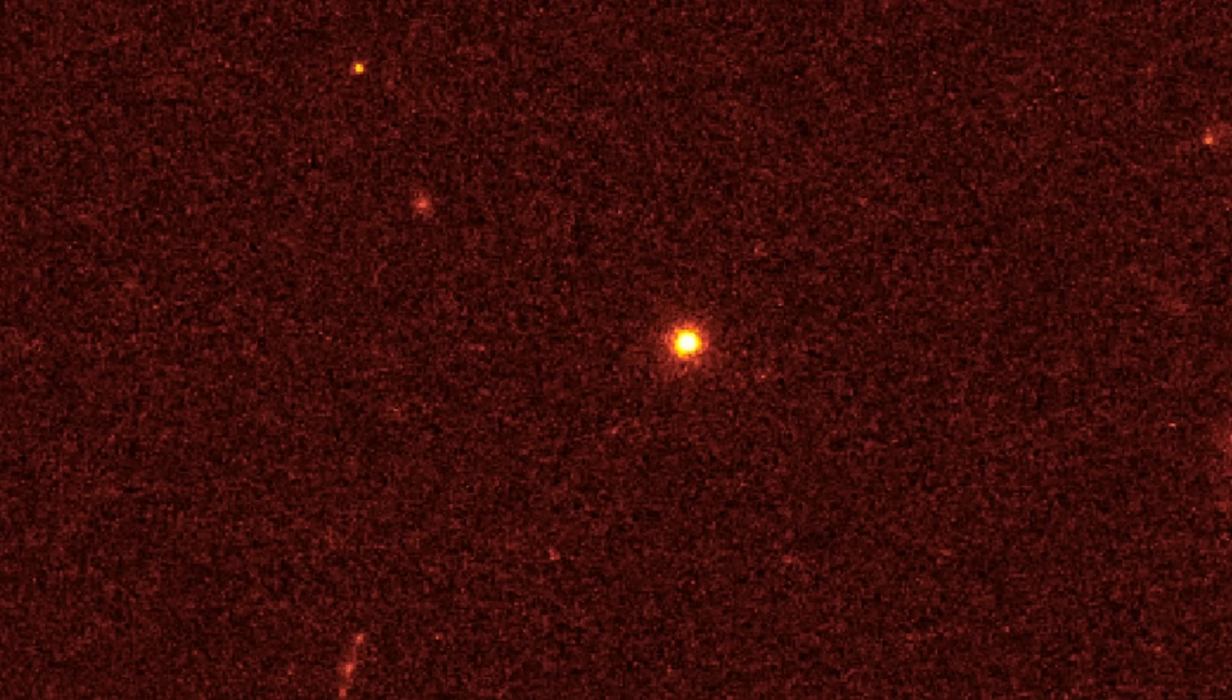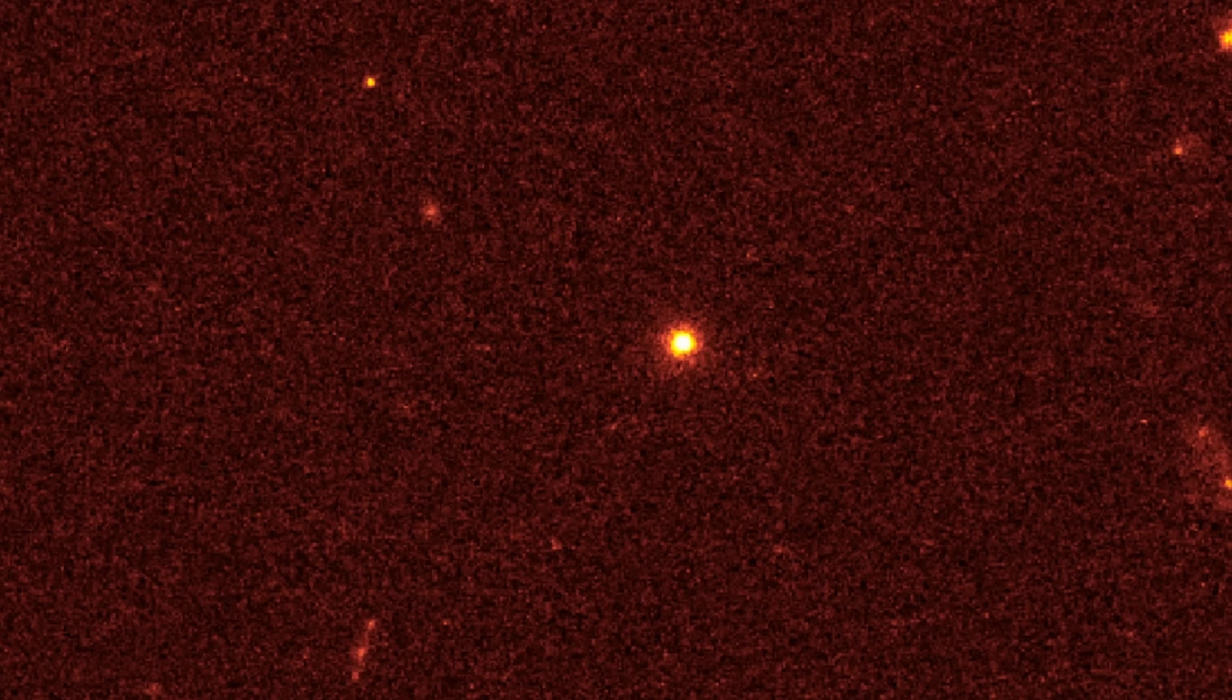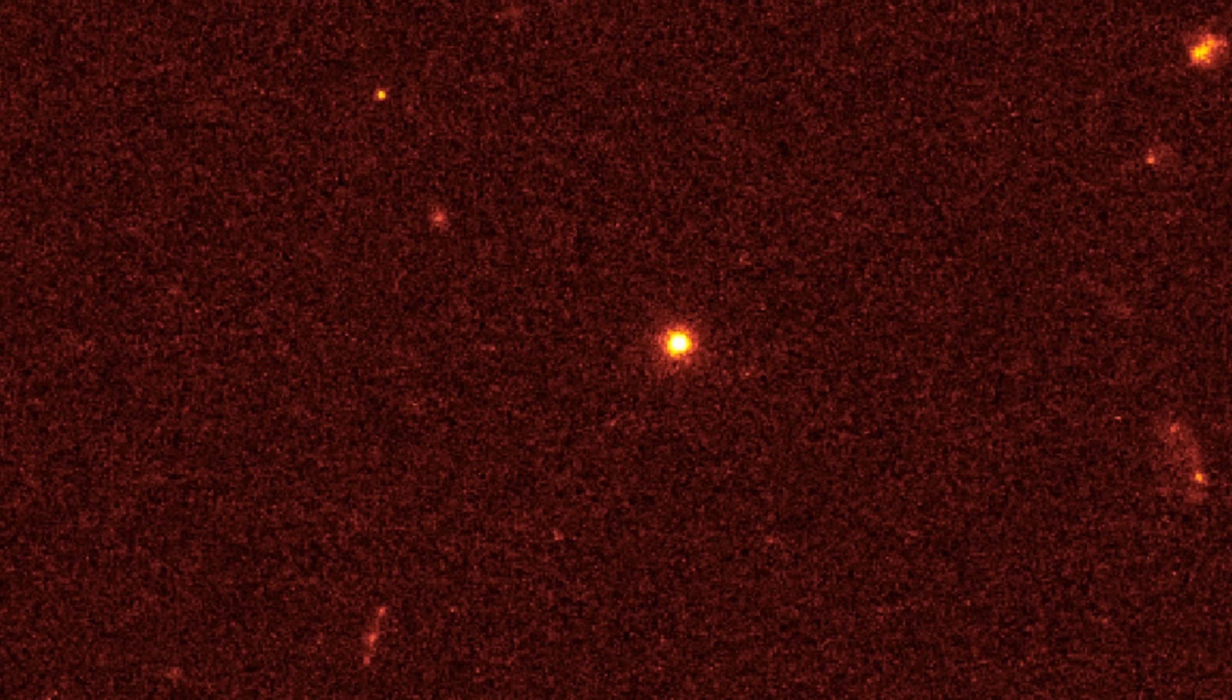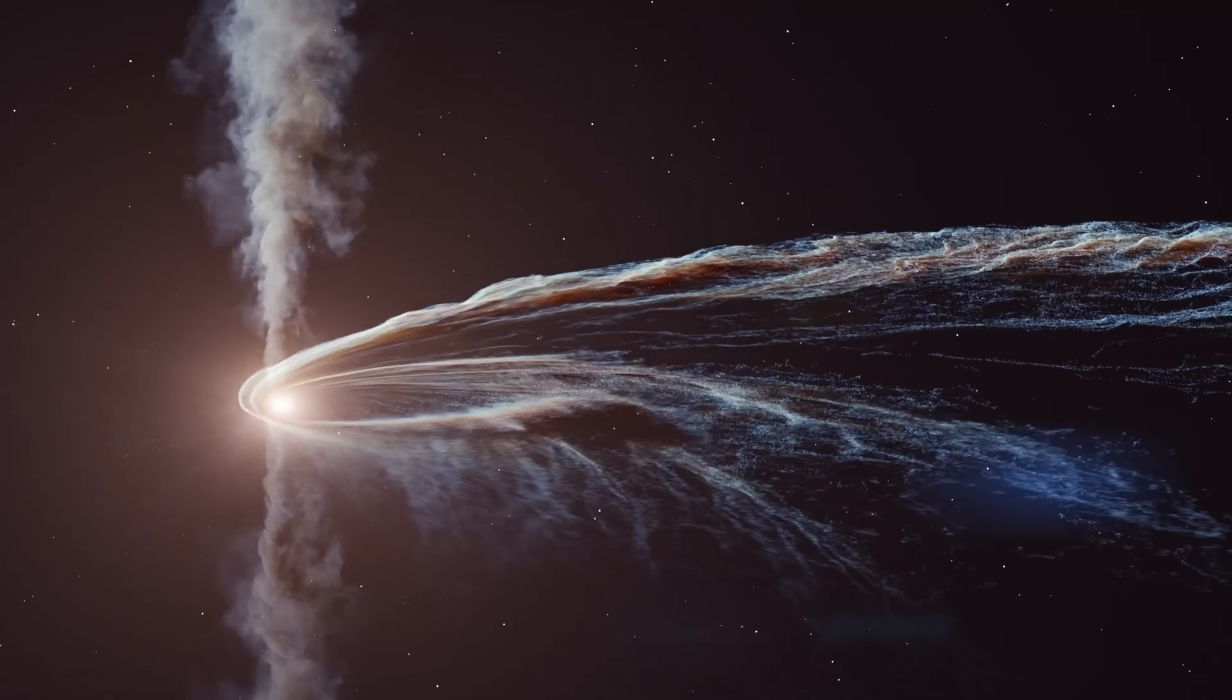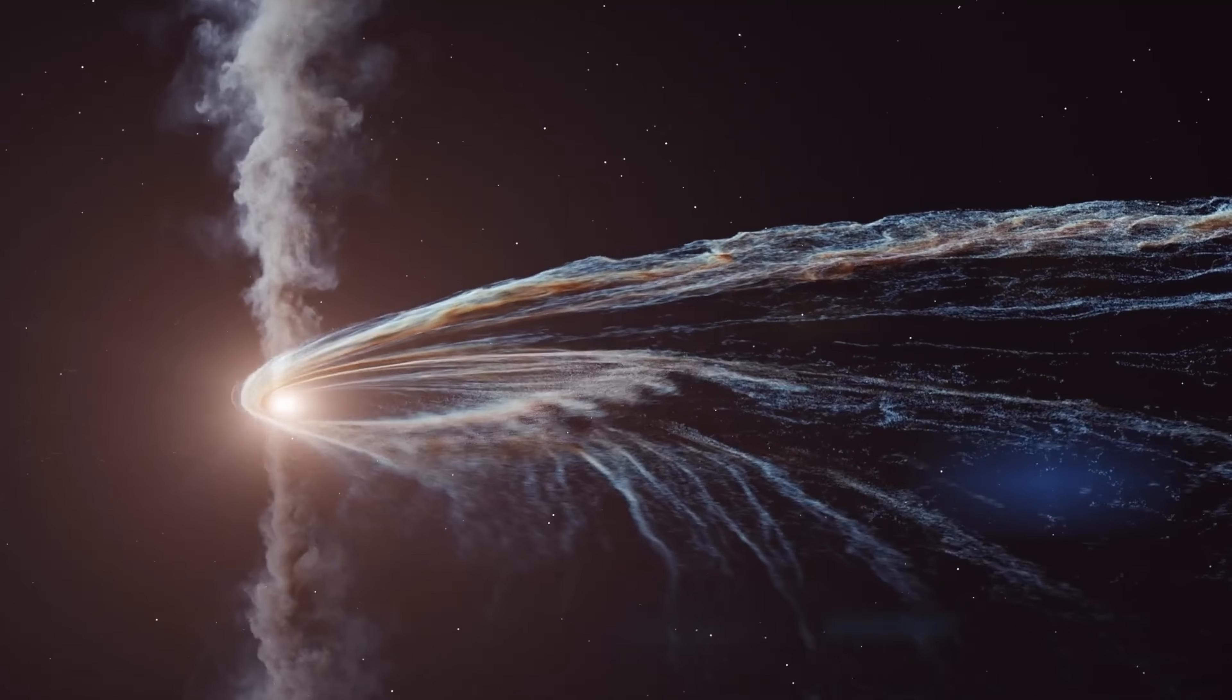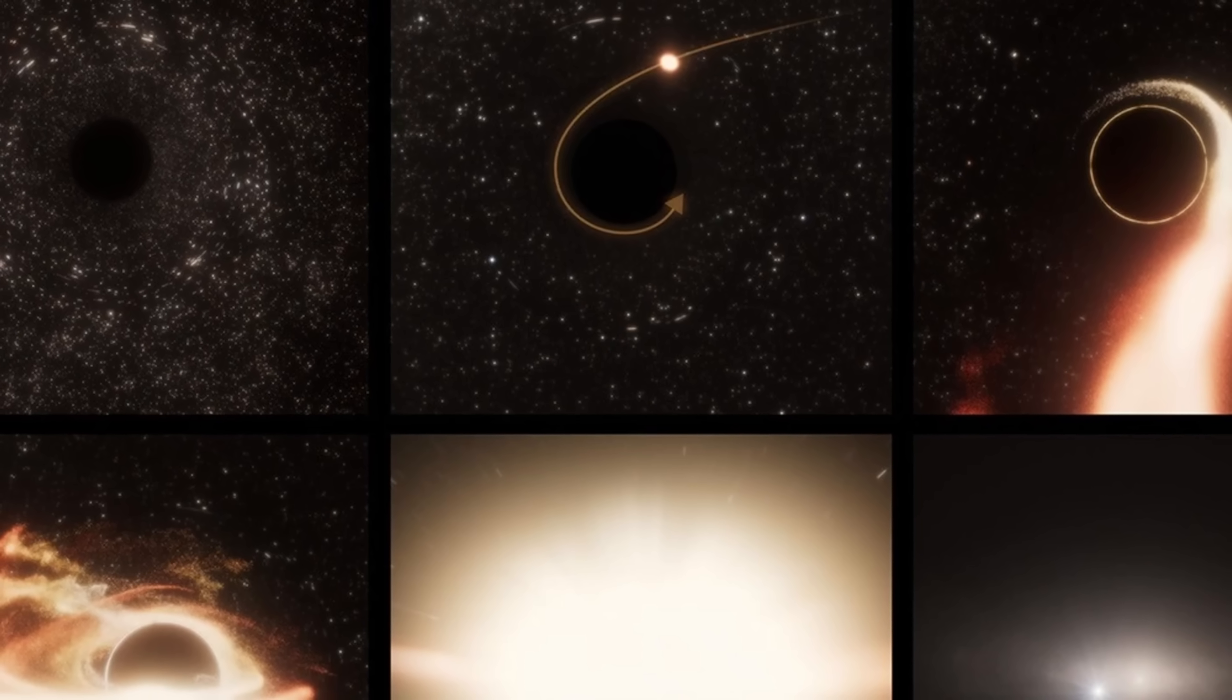But as a result this also produces enormous emissions, very often visible from millions and even billions of light years away, especially if this black hole produces very powerful astrophysical jets. These jets seem to appear in at least one to maybe even three percent of all TDEs.